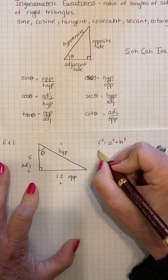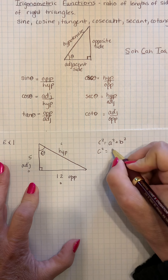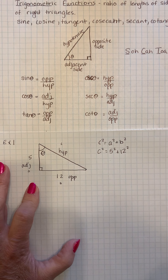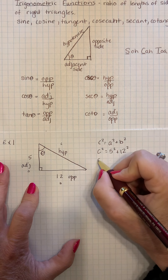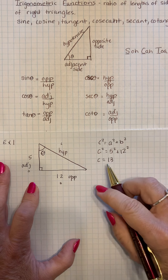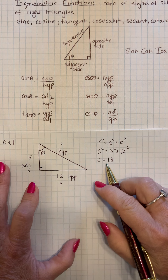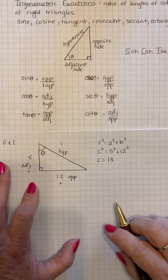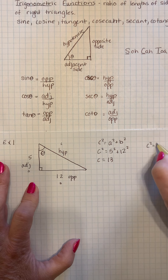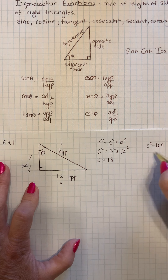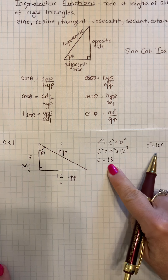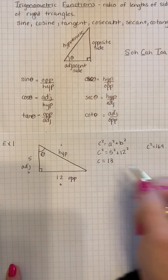C squared is equal to 5 squared plus 12 squared. And if you recall, this is a special triangle — C is going to be 13. Now remember, when we take the square root it's plus or minus, but we're never going to have a negative length on a triangle, so we only ever call that positive. So the hypotenuse is 13.